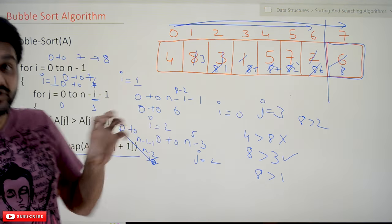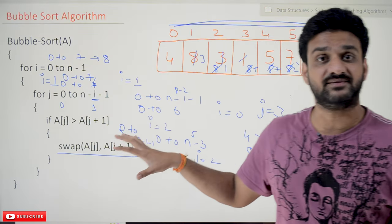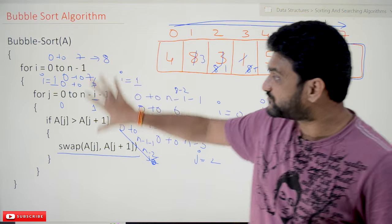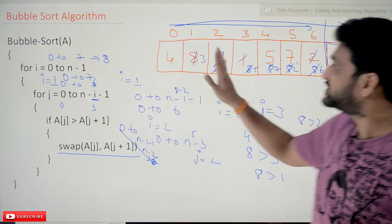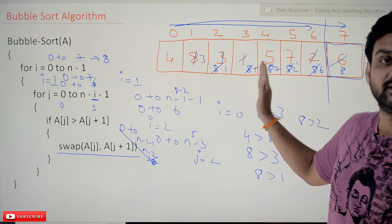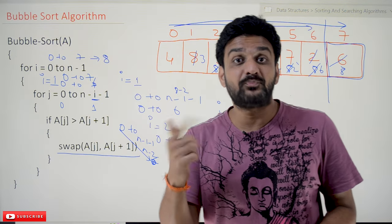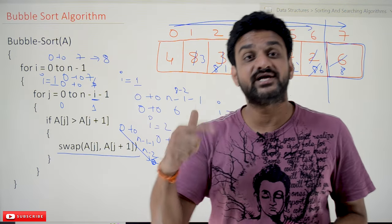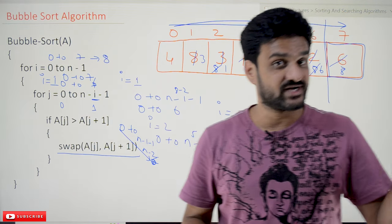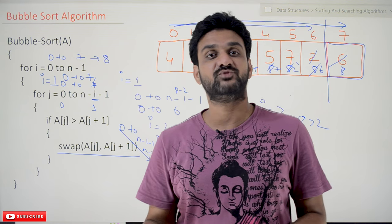This is the original, standard bubble sort algorithm — it is not the optimized version. The disadvantage is that even when elements are already in sorted order, comparisons continue unnecessarily. We need to optimize this algorithm, and we will try to understand the optimized version in our next class.